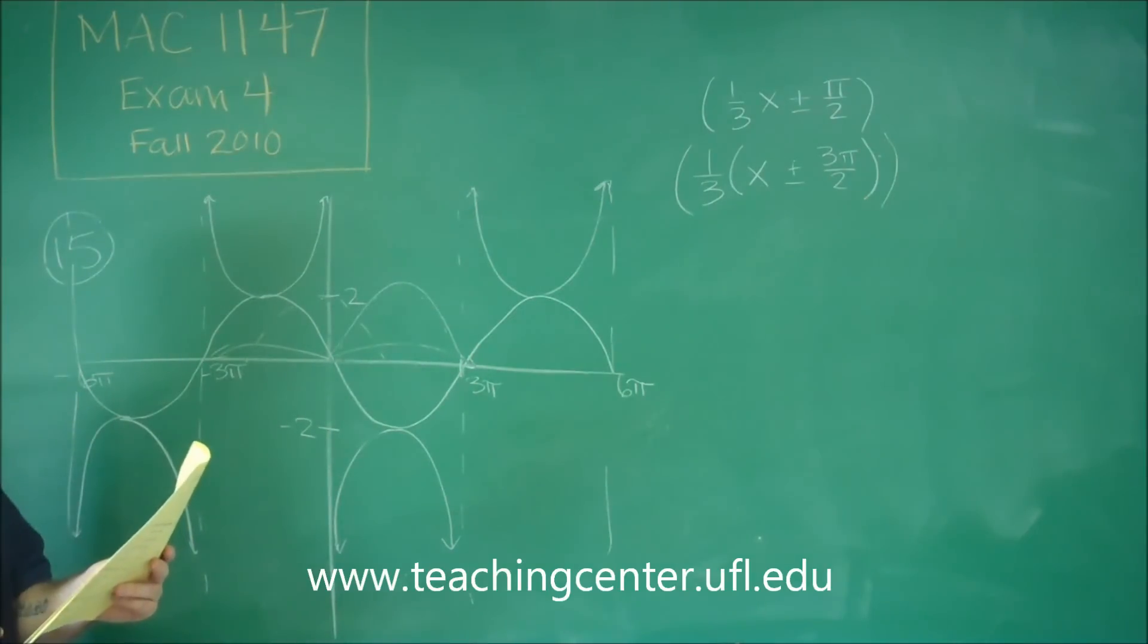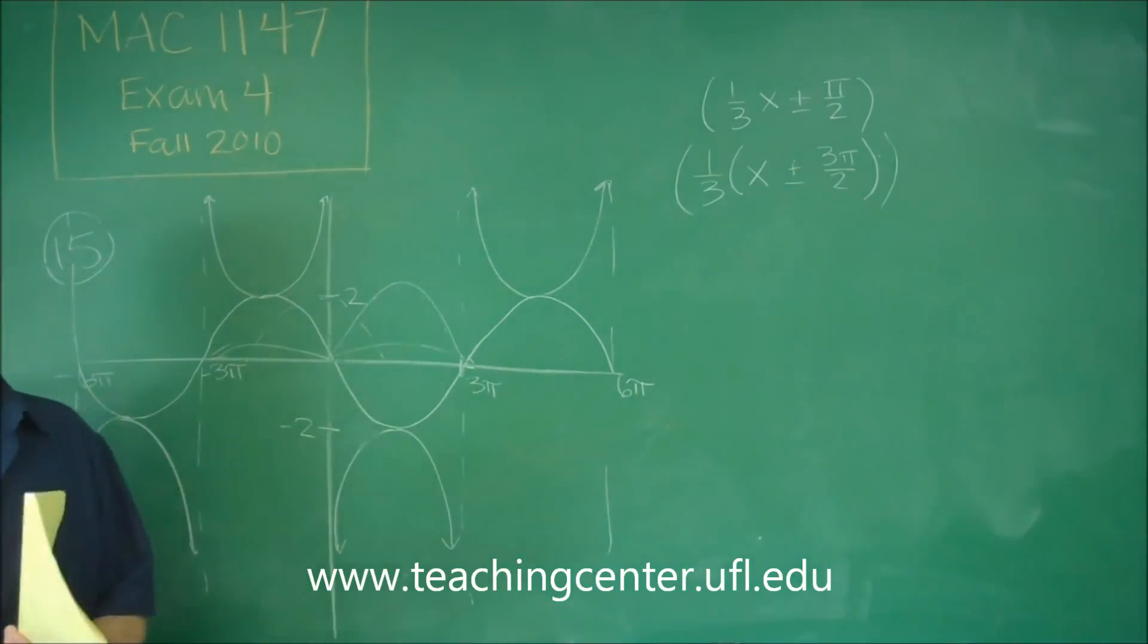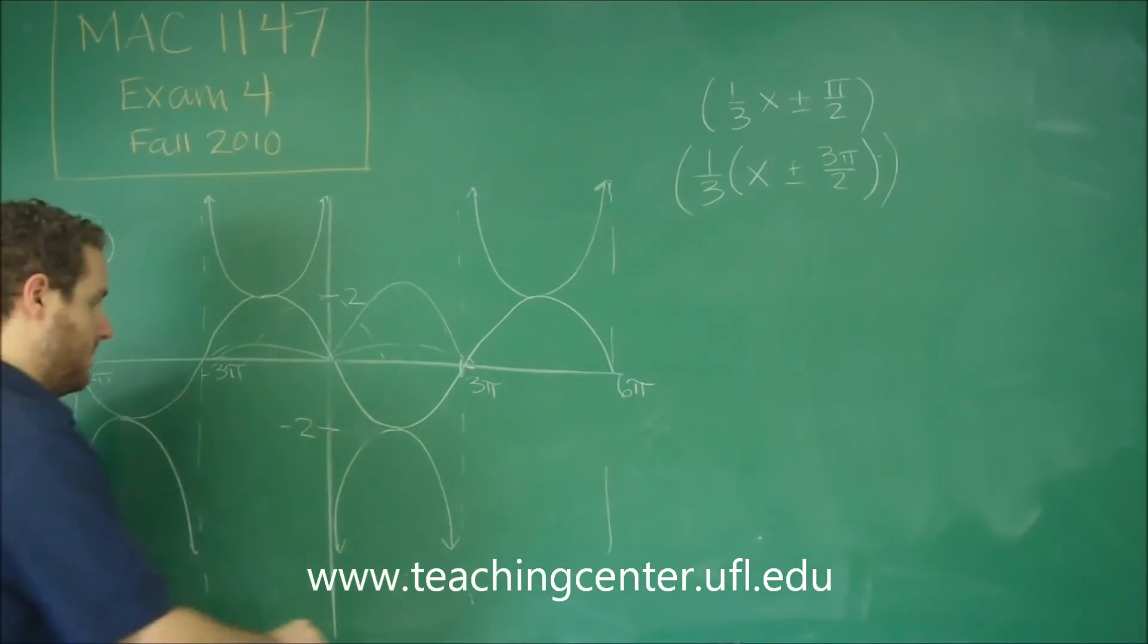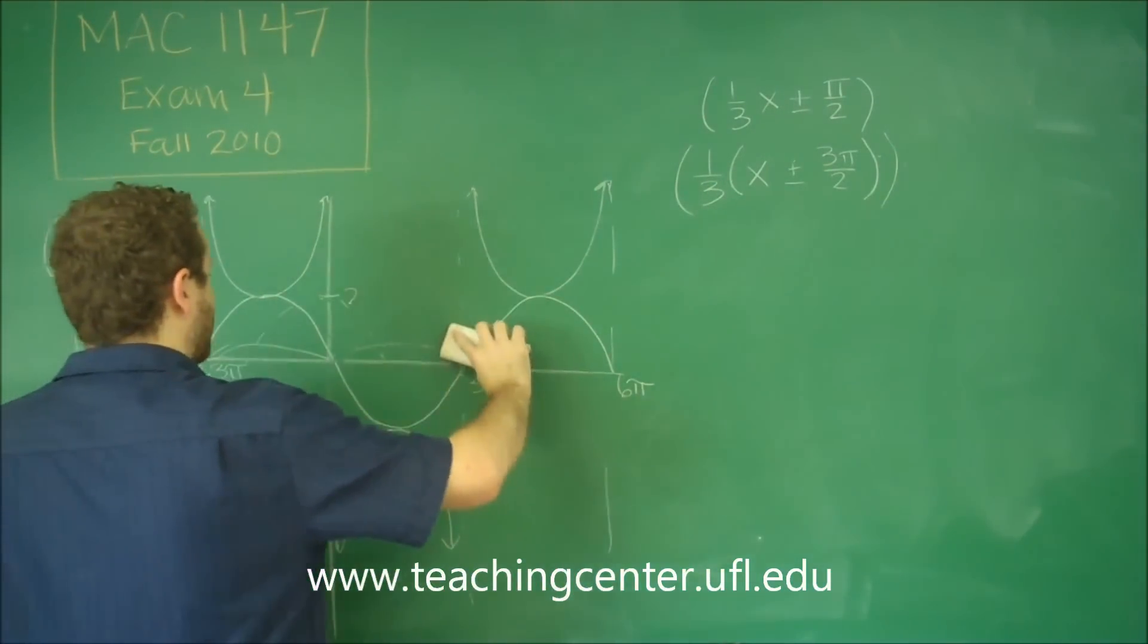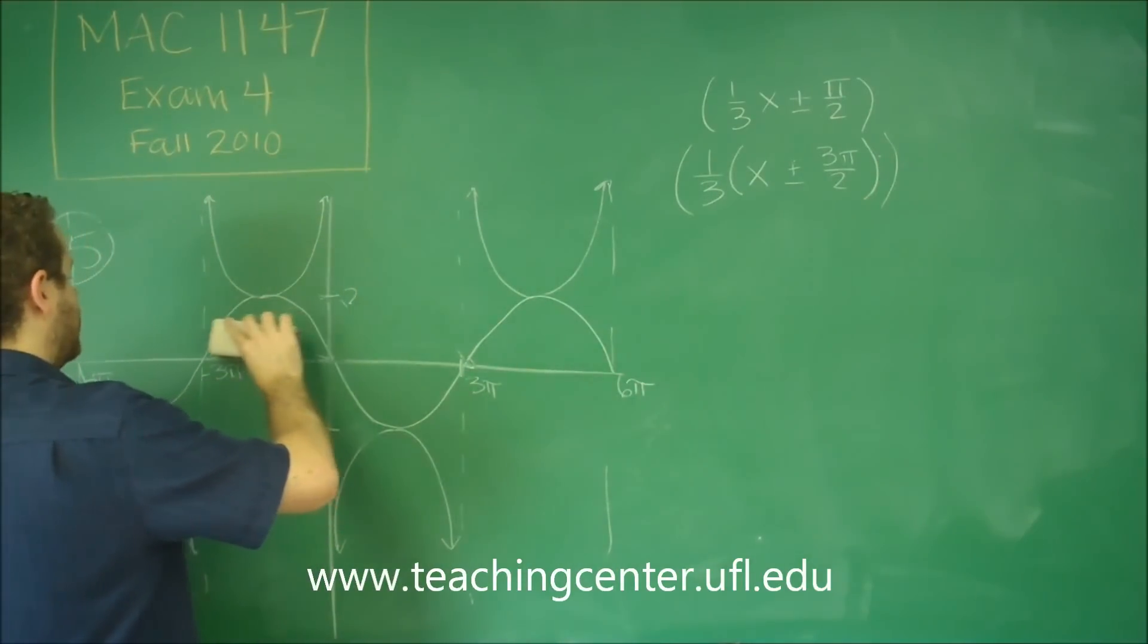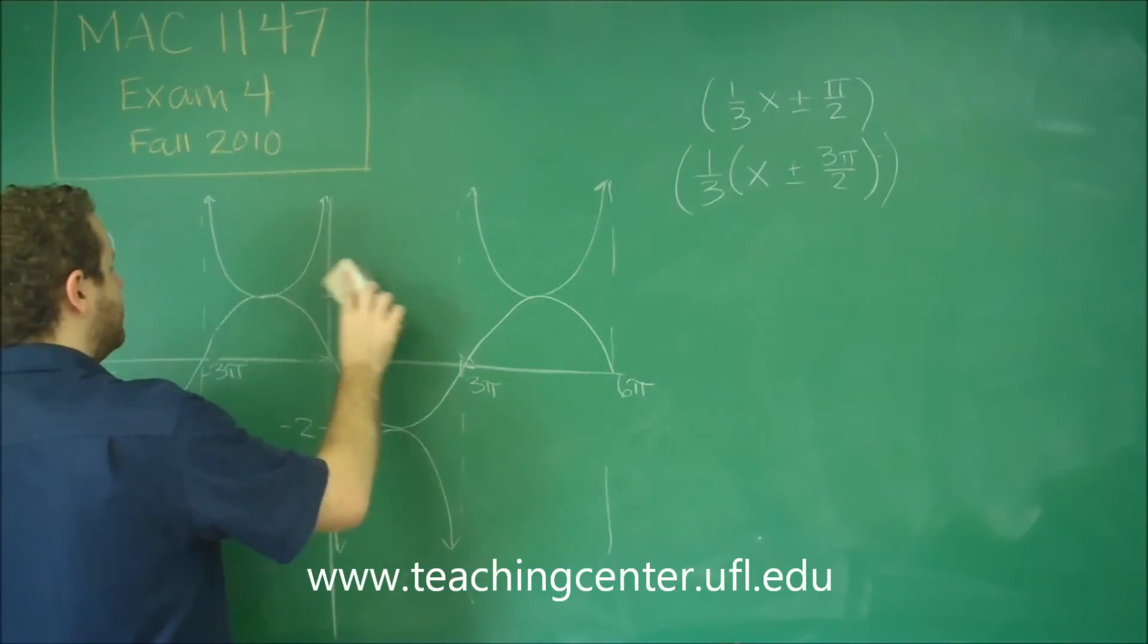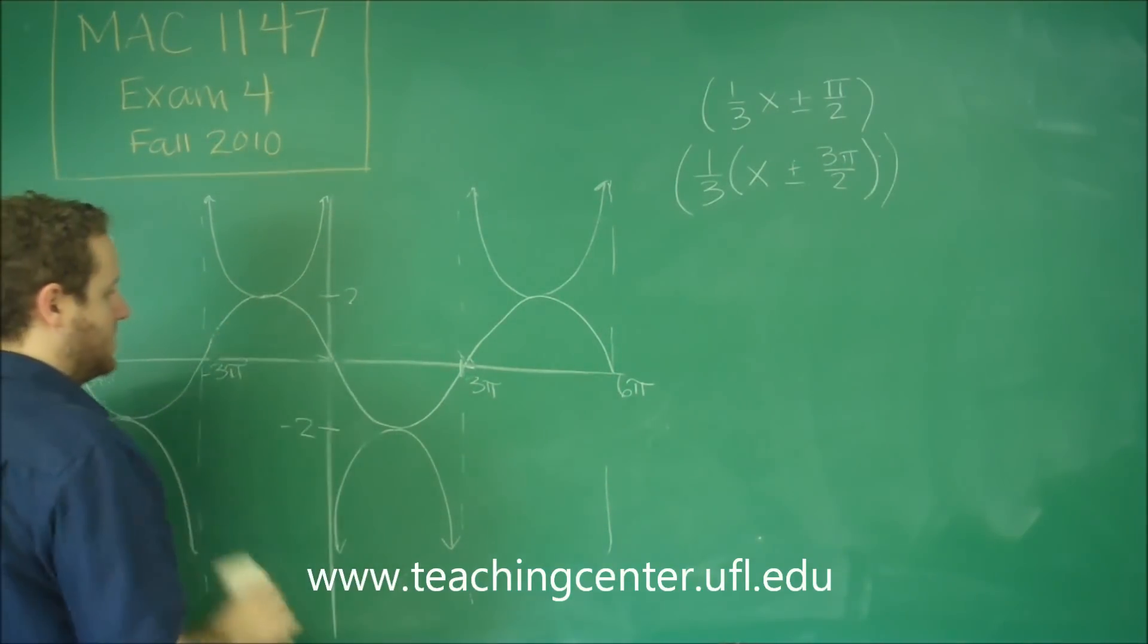So B and D, definitely wrong, because it would have to be a shift of 3 pi if it came from a sine graph or a cosecant graph. So let me erase this to now show the secant graph. And now with the secant graph, we only have two choices, so this should be an easy distinction to make.